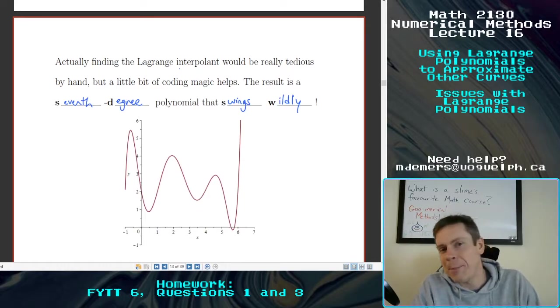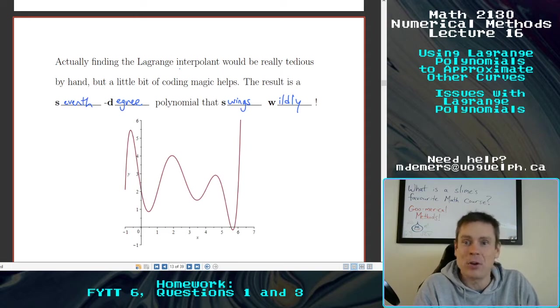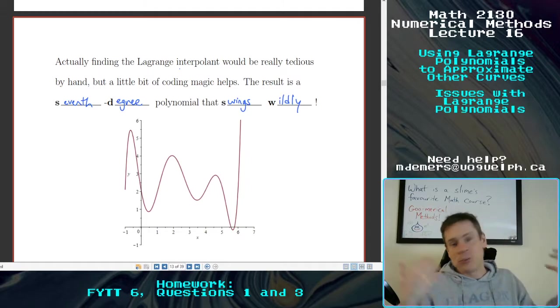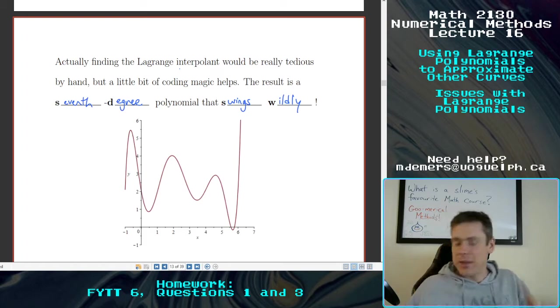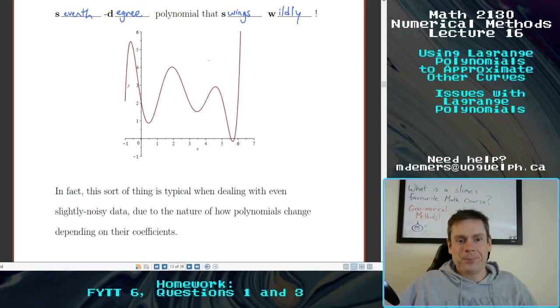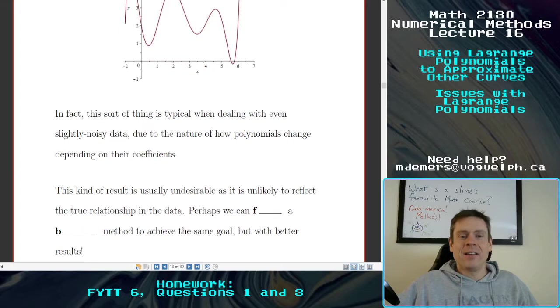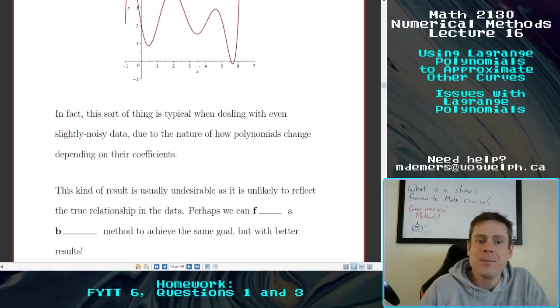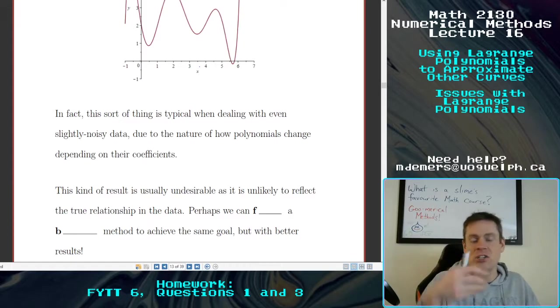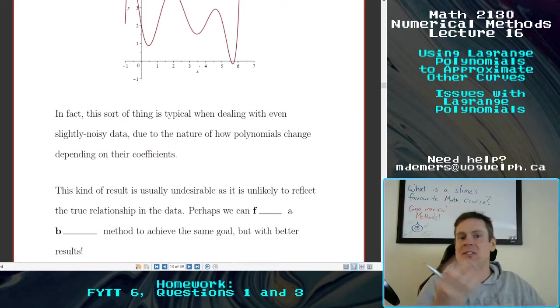It goes through all of those different points, but this here is unlikely to be the true relationship that's given by that data to begin with. So we're trying to use these very high polynomials, but because of the nature of high degree polynomials and the fact that they can have these bends and twists, to get them to bend and twist just right, to get them to fit the data in just the right way, there's one unique seventh degree polynomial that goes through every single one of these points. And this is the one. Not cool. In fact, this sort of thing is not just one example that I crafted up. This is typical when you're dealing with even slightly noisy data due to the nature of how polynomials change, sensitive to their coefficients. And that kind of result is not usually desirable.